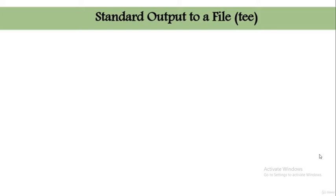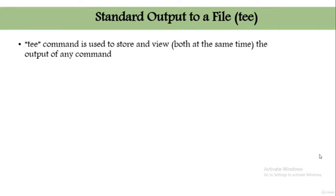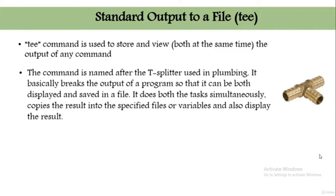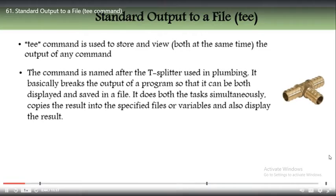We have learned how to populate a file using redirect commands like the greater-than sign — you echo something and output it to a file. Now there's another way to do the same thing using the command tee. The tee command is used to store and view the output of any command at the same time. The command is named after the T-splitter used in plumbing.